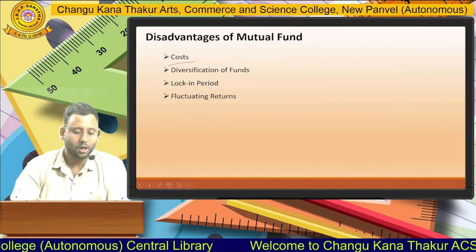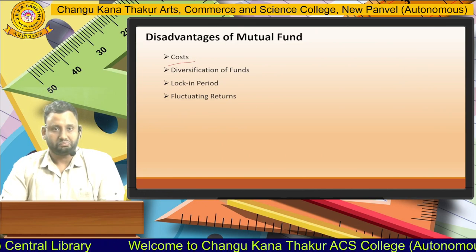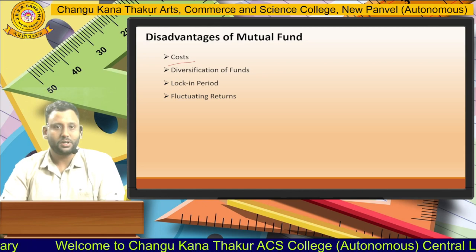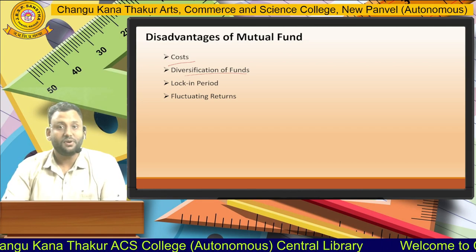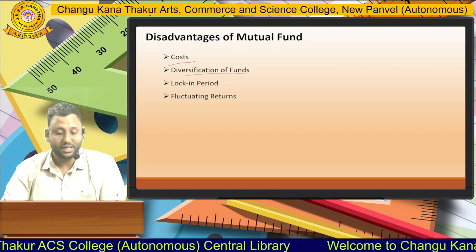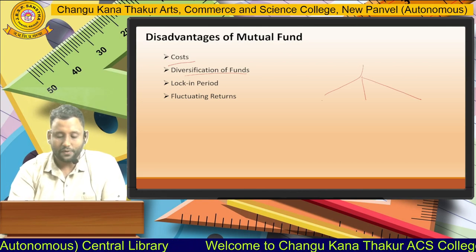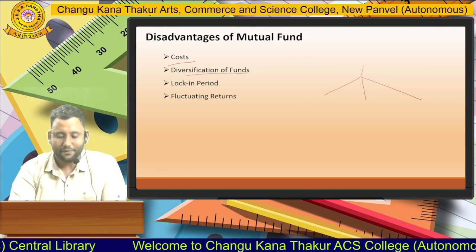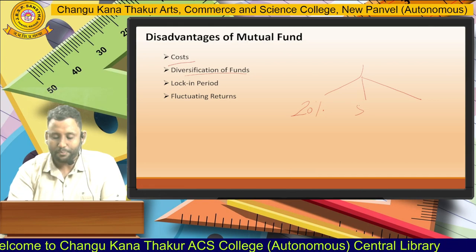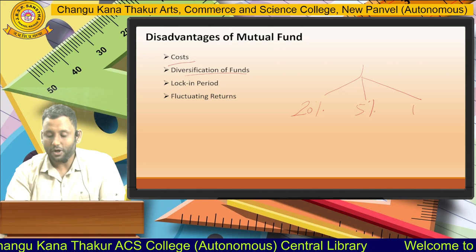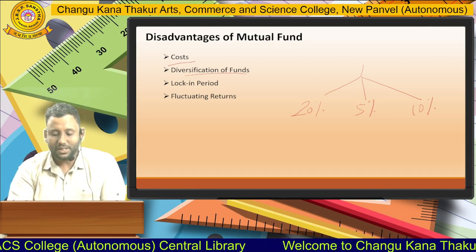Some disadvantages: first is cost — some mutual fund costs are very high; if you invest more, it will cost you more in expenses. Second is over-diversification of funds — this is both an advantage and a disadvantage. If your investment is spread across various areas and you get a profit of 20% in one area, 5% in a second, and 10% in a third, you have missed the opportunity to concentrate in the best-performing area.